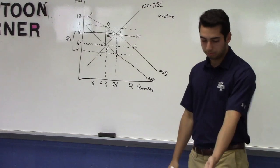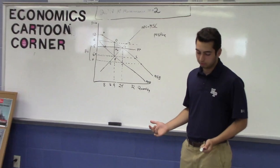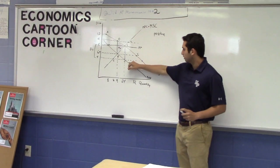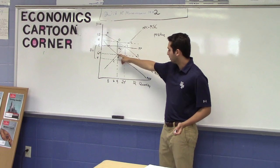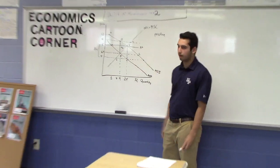Does the price floor correct the market failure? It would correct the market failure, because as you see, rather than producing at the marginal private benefit, they produce at the marginal social benefit at point F.